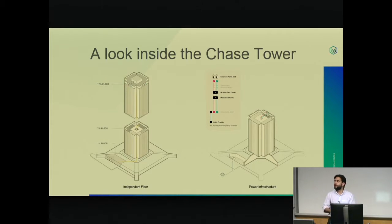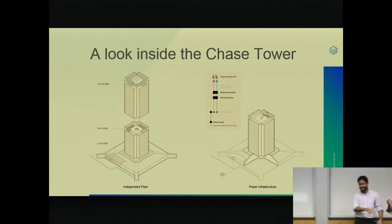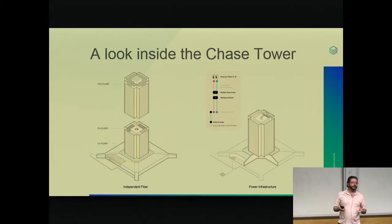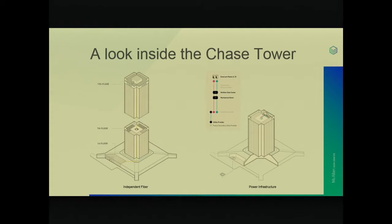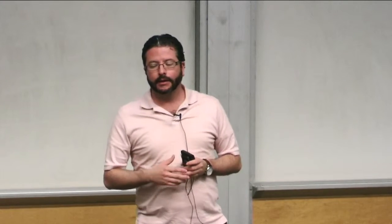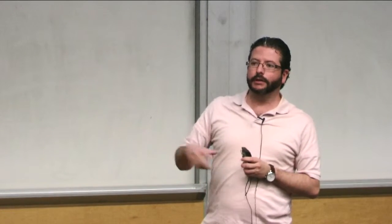As you can see in the picture on the left, we have independent fiber. We have a manhole. We have actually two manholes. We are using just one independent fiber through the first floor, seventh floor, and 17th floor. And we have a power infrastructure that is completely dual, as you can see in the picture. From the utility provider, we have two generators that goes into the mechanical room, then McAllen Data Center, then we have the Emerson plant. And from the Emerson plant, it's dual-corded to every rack of every single customer that we have there.